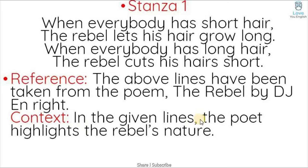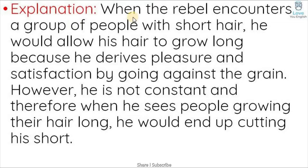Context: In the given lines, the poet D.J. Wright highlights the rebel's nature. Explanation: When the rebel encounters a group of people with short hair, he would allow his hair to grow long, because he drives pleasure and satisfaction by going against the grain.